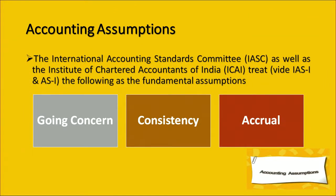Let us now understand the accounting assumptions. The International Accounting Standard Committee, or IASC, has defined that accounting standards or assumptions form the fundamental assumptions, broadly into three categories. First is the going concern concept, second is consistency, and third is accrual. The going concern concept says that the entity or business is perpetual — it will exist for an indefinite time period — and hence we need certain accounting assumptions or policies to keep the business going for an indefinite period and help in its continued existence.